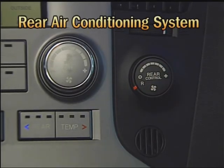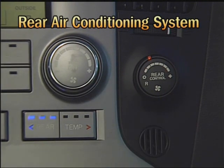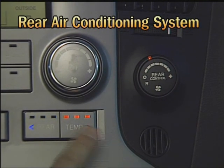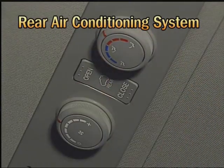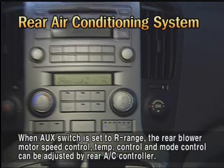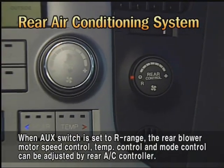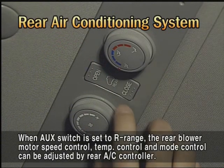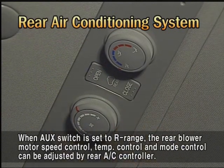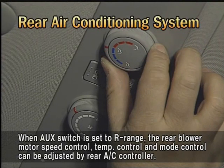As to the rear air conditioning system — the rear air conditioner is operated by the communication signal of the front air conditioner module, and it can be controlled independently. When the auxiliary switch of the front air conditioner control module is set to R range, the blower motor speed control, temperature control, and mode control can be adjusted by the rear air conditioner control module.